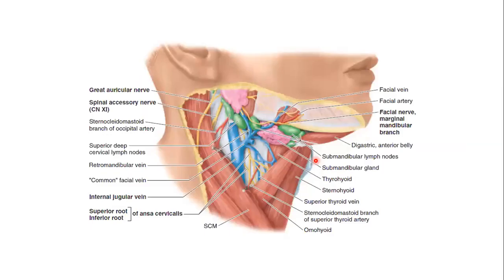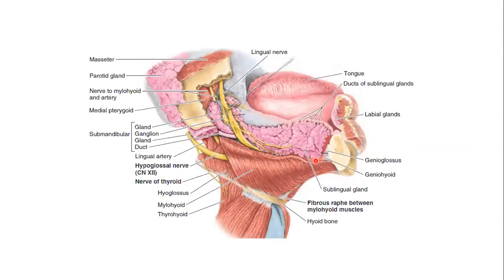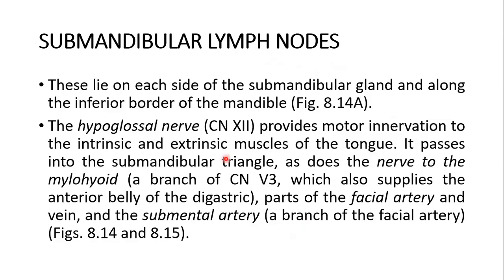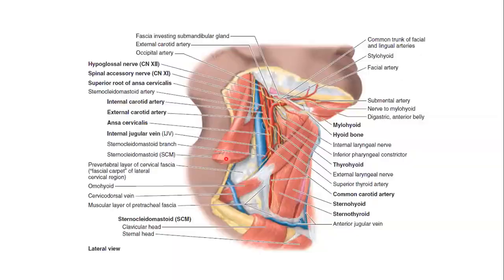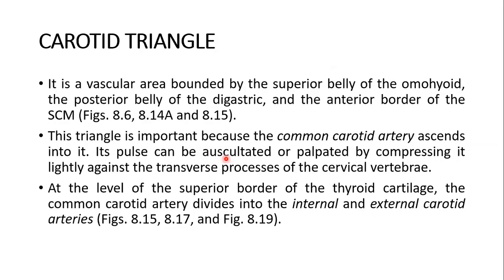Then the law — the very, very important carotid triangle. In my opinion, it is the most important of this area — the carotid triangle — due to the presence of the common carotid artery and its terminal branches: the external and internal carotid arteries, of course, which has the carotid sinus and the carotid body. The carotid triangle is bounded by the superior belly of the omohyoid, the posterior belly of the digastric, and the anterior border of the sternocleidomastoid.